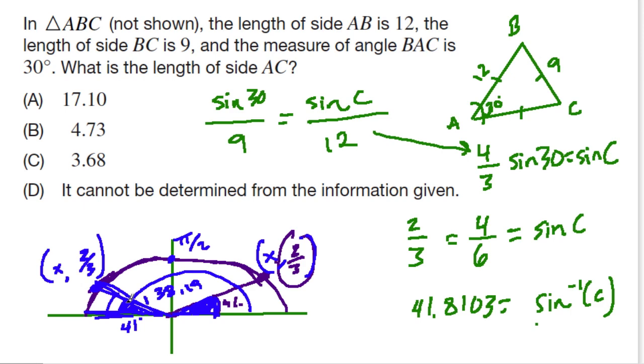So because there's two answers, we can't use this as a function to figure out the exact length of AC. If we could, if there was some restriction there,